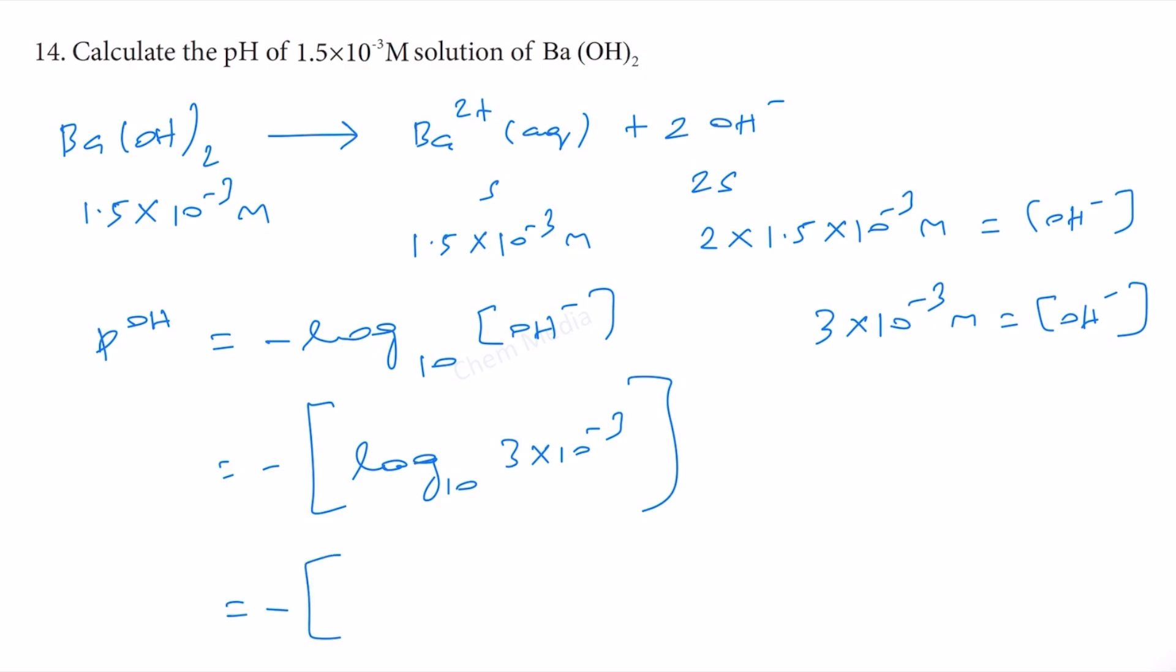Therefore this equals minus log base 10 3 plus log base 10 10^-3. This minus 3 we can bring to the front that will become minus 3 log 10 base 10, and we have one more minus here therefore eventually it becomes plus. Therefore this value equals 3 minus log base 10 3. Log 3 value is 0.4771, therefore the pOH value equals 2.52.